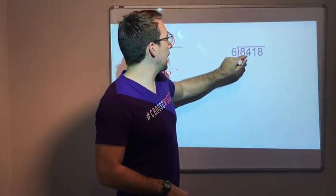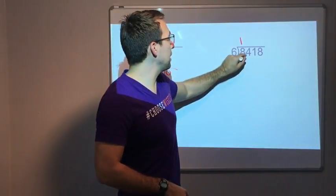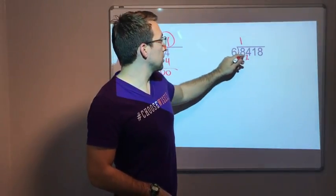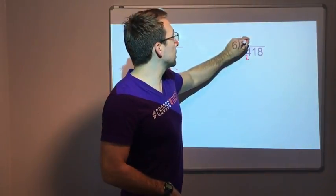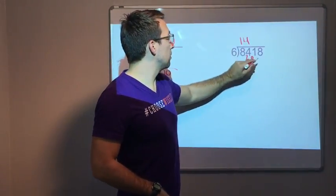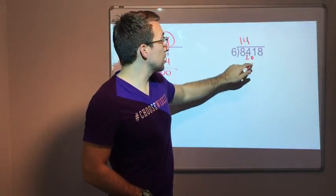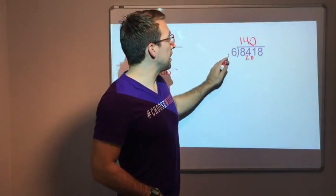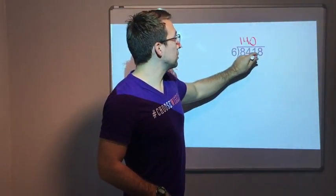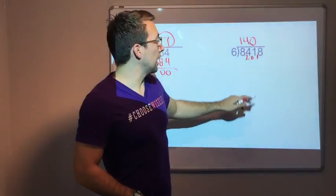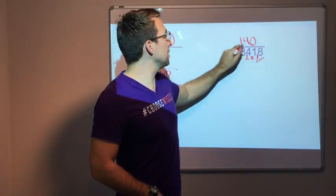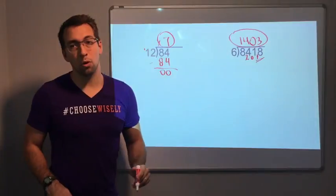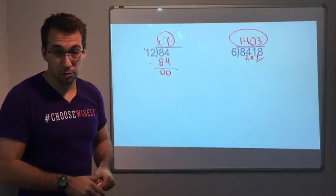Six goes into eight one time, remainder of two. Six goes into twenty-four four times, remainder of zero. Six goes into one — it does not, so we put a zero, and then our remainder is one. Six goes into eighteen three times. One thousand four hundred and three.